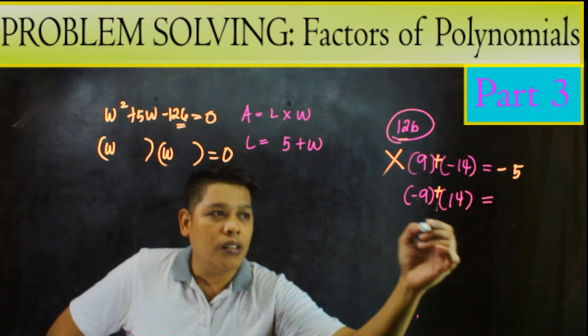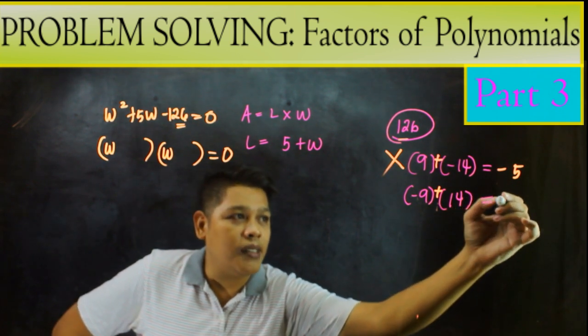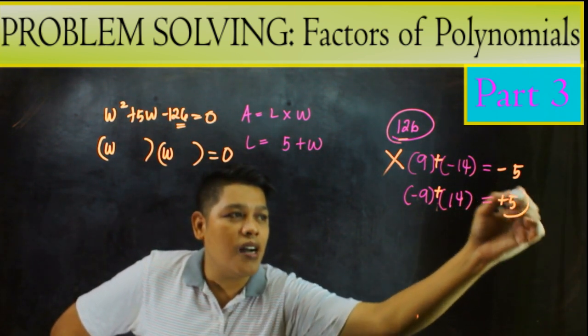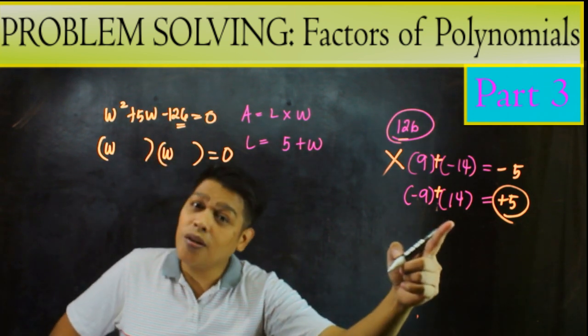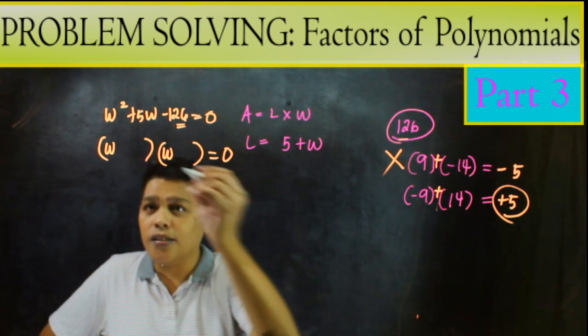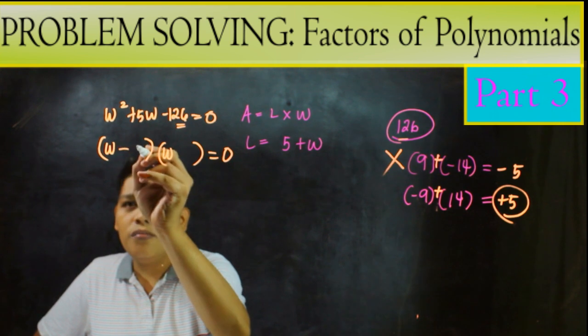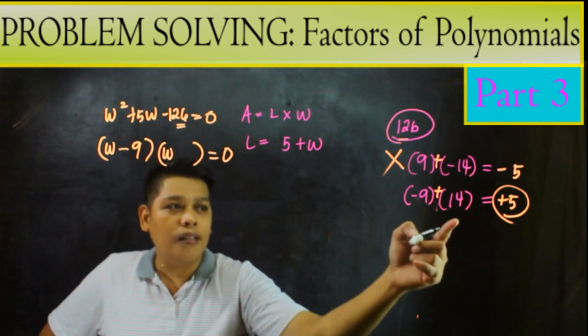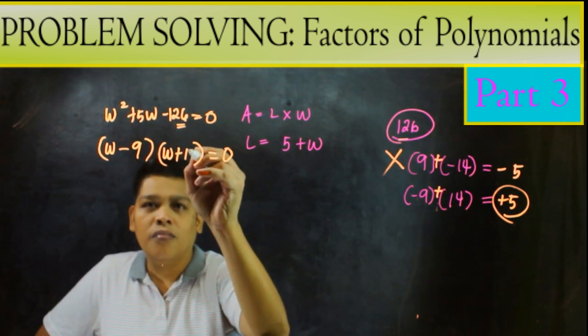Kapag pinag plus naman natin ito, this is positive 5, which is ang kailangan natin. Positive 5. So ibig sabihin, ito yung gagawin natin. Ito yung gagamitin natin. So W, minus 9. Then, positive 14.